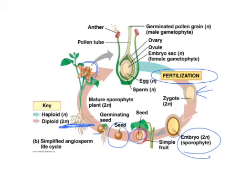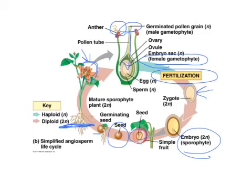The sporophyte produces gametes in the flower. The gametophyte generation for flowering plants is totally dependent upon the sporophyte generation. The male gametophytes are pollen, and the female gametophytes are down in the ovary — both still on the mature sporophyte. Once fertilization happens, ideally with a male gametophyte from a different plant, the seed grows on the original sporophyte, then falls off, gets carried by wind, and forms its own mature sporophyte.